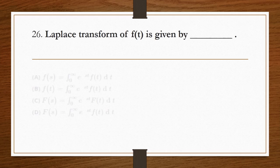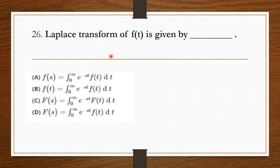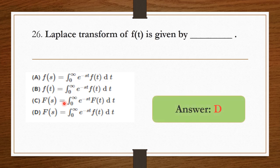The Laplace transform of f(t) is given by the standard formula — option D is the right answer: F(s) = ∫₀^∞ e^(−st) f(t) dt.